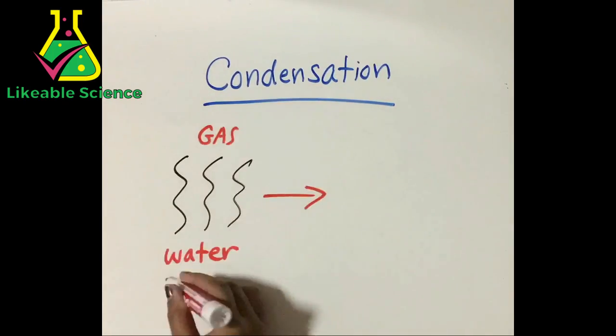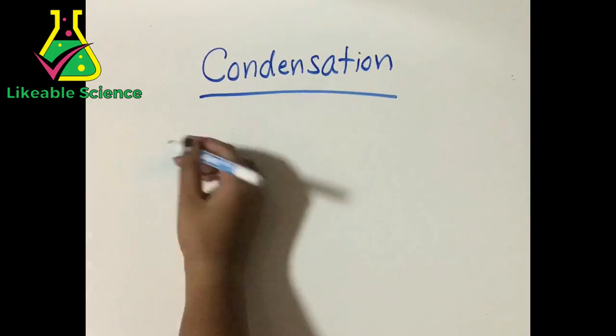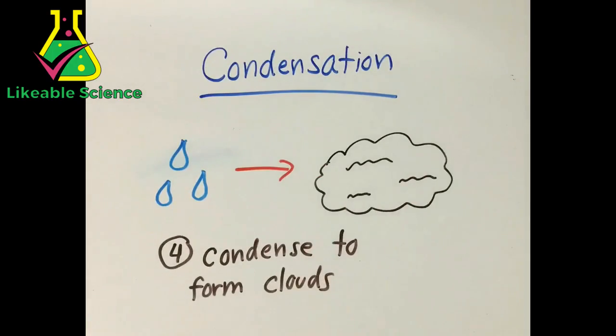The condensation happens, the second process. It turns water vapor into liquid water droplets. Some water vapor in the atmosphere now condenses and finally forms some clouds.